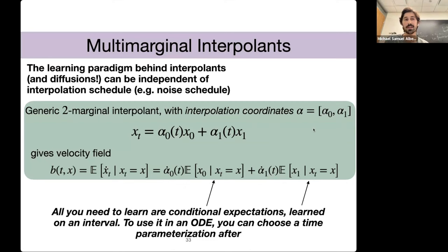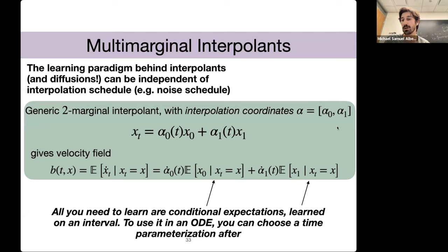The key realization is that all you need to learn to produce valid generative models are these conditional expectations. You don't actually need to learn specific parameterizations of alpha_0 and alpha_1 — indeed you can choose them after the fact. To use it in an ODE you need some alpha parametric in time, but you just need to be able to sample over the whole space where alpha_0 and alpha_1 are defined to learn the velocity over the entire time.